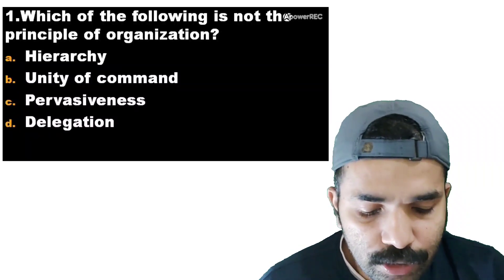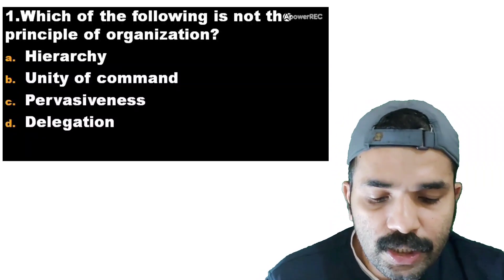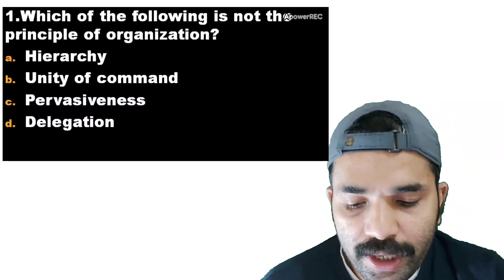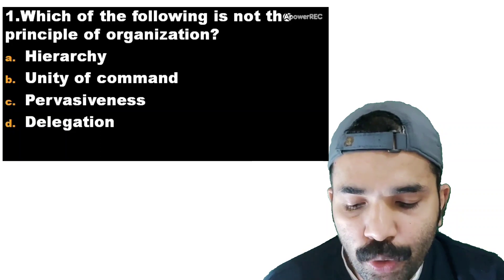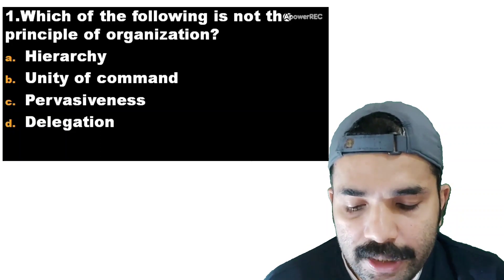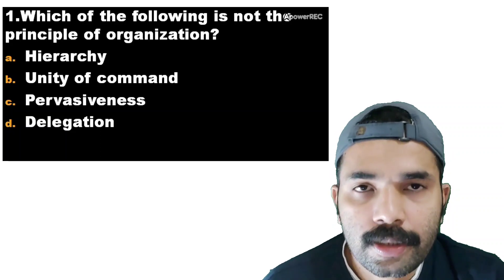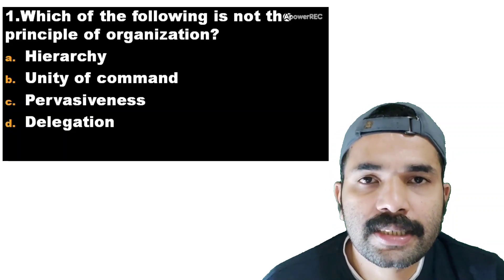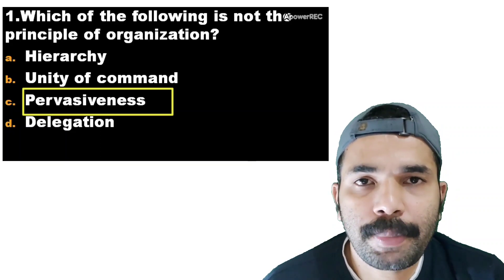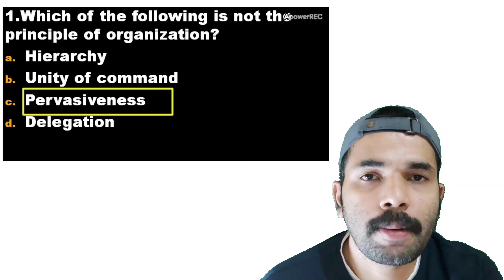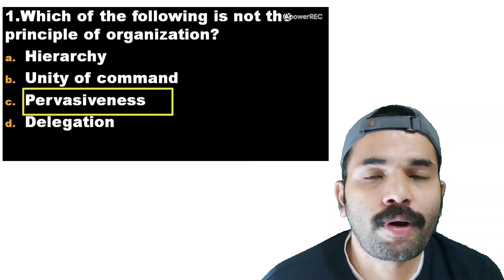Subscribe to our channel. Which of the following is not the principle of organization? Options: Hierarchy, unity of command, pervasiveness, delegation. The correct answer is pervasiveness. Pervasiveness is not the principle of organization.